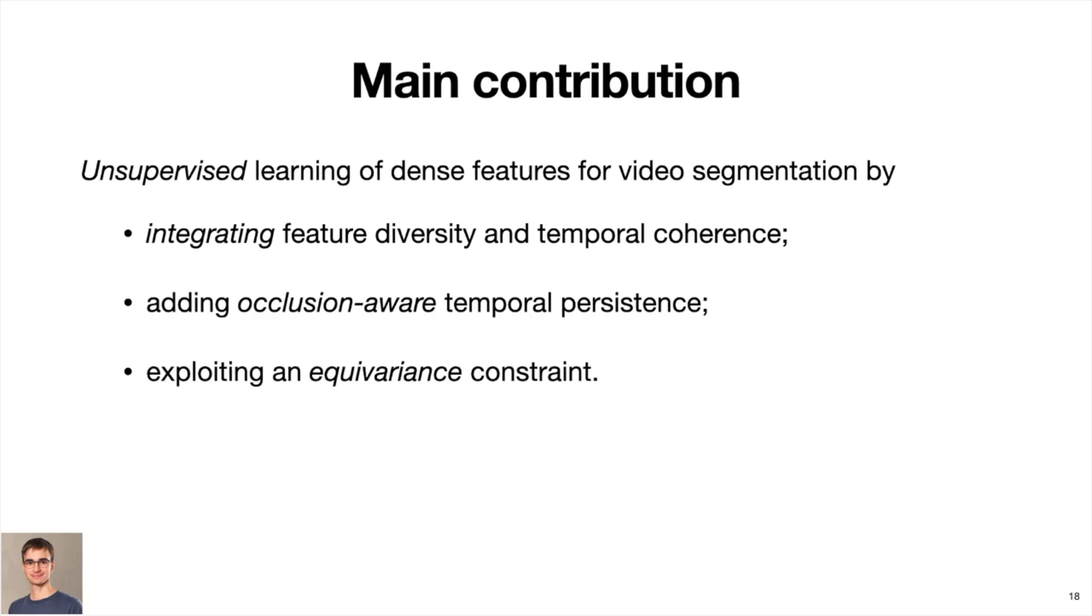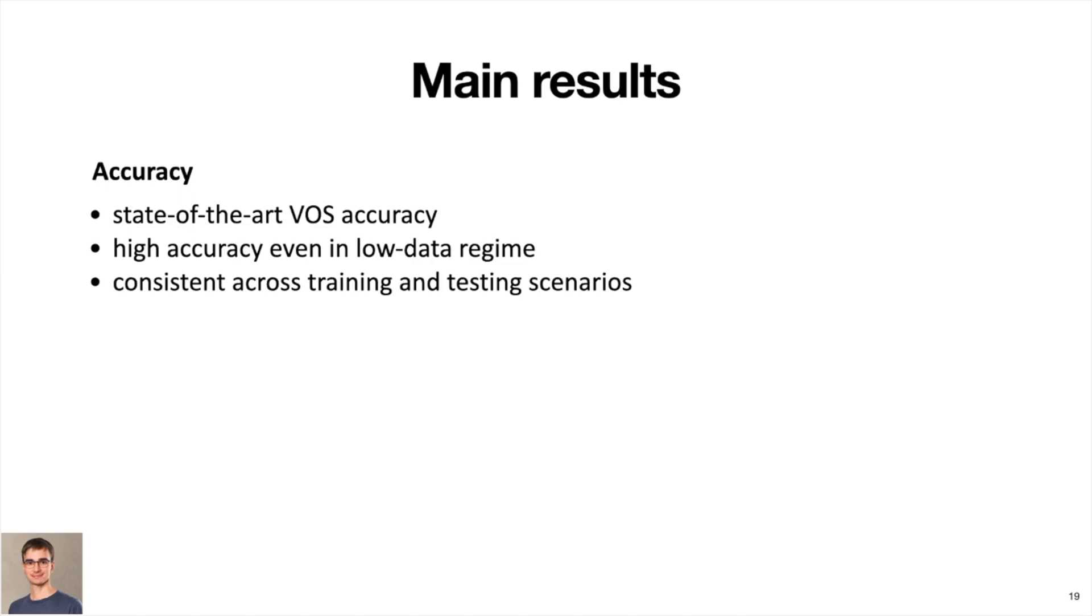As the outcome of combining these assumptions, we have proposed an unsupervised framework that allows us to learn dense feature representations in a fully convolutional manner and avoids degenerate solutions, which has not been possible before. Trained without any supervision, our framework achieves state-of-the-art video object segmentation accuracy compared to previous work. This holds even if we use significantly less data and is consistent across training and testing scenarios.